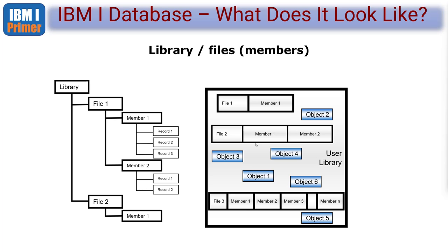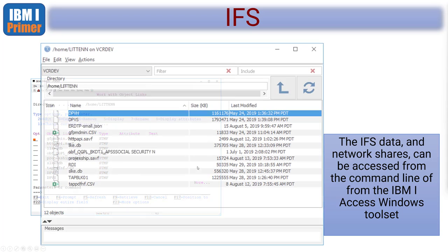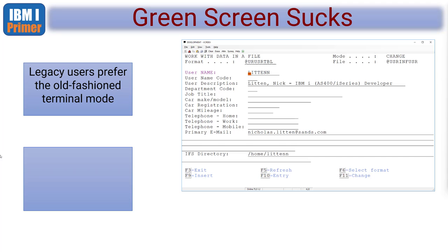The IFS is a way of looking at the data on our machine in the style of Windows Explorer. All your IFS data including libraries and files can be shared to the Windows world using this command line. It can also be shared using IBM ACS - the Access Client Solutions, which is a Windows graphical tool. Legacy users tend to prefer the old-fashioned terminal mode, whereas modern developers prefer web-based tools or GUI.